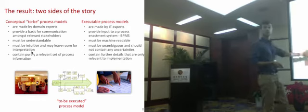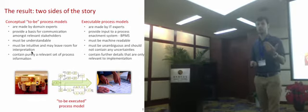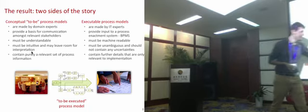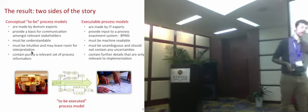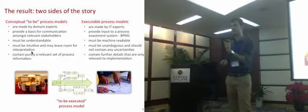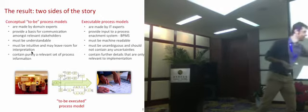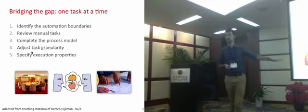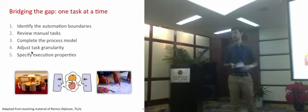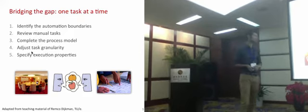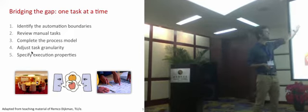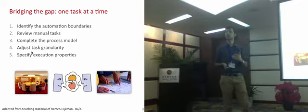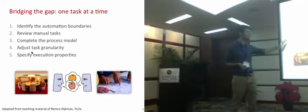We are going to present a five-step method by means of which we will reach an intermediate artifact that sits between the conceptual to-be process model and the executable one, which we call the to-be-executed process model. It's an intermediary step. The method is made up of five steps: identify the automation boundaries, review manual tasks, complete the process model, adjust the granularity of tasks, and finally specify execution properties.